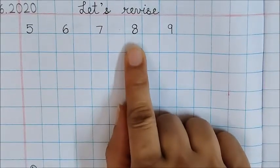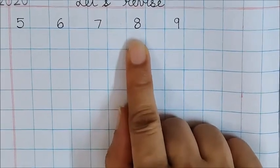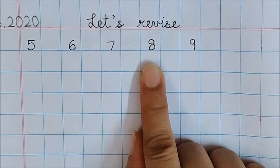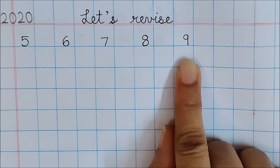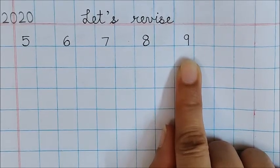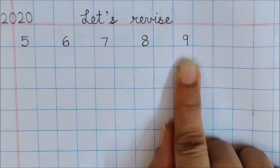What is this number children? Good. 8. And this number? Very good. 9. This is number 9.